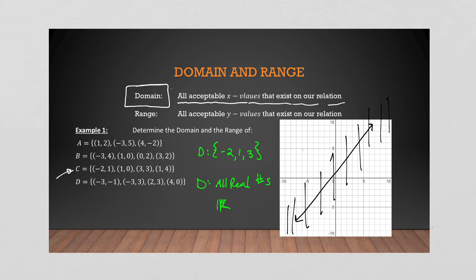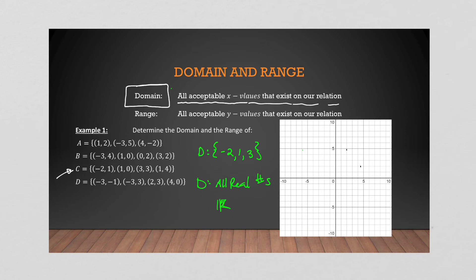Domain is all of the acceptable X values, and range is all of your acceptable Y values. In the case of our points, the range is just the Y values: 0, 1, 3, 4 — put them in ascending order. It's very rare that you just have a bunch of points, because if you have a continuous graph, your domain and range becomes more involved and involves inequality symbols.